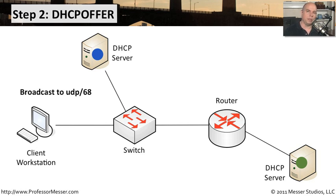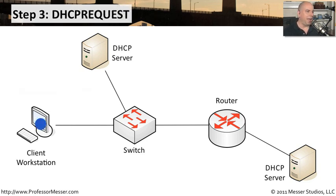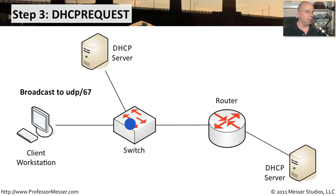It can't send a directed frame or a unicast because our client workstation doesn't yet have an IP address. Once the client workstation has an offer from the DHCP servers — here's an IP address, a subnet mask, and some options — the workstation considers those options and decides it would like to make a DHCP request, sending a broadcast to a specific DHCP server saying, I would like to use your offer.